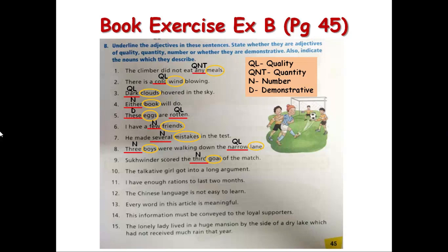Number 10: 'The talkative girl got into a long argument.' 'Talkative' is an adjective describing the girl — it tells about the quality of the girl, so we write QL and circle 'girl'. Then 'long' is an adjective for the noun 'argument' — long is also quality. There are two adjectives here describing two different nouns, so we write the type labels above each adjective separately.